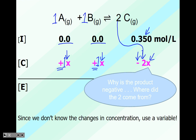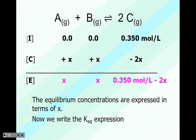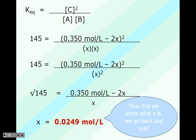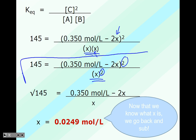Now that we have this, we figure out the equilibrium concentrations in terms of variables: x for species A, x for species B, and 0.350 minus 2x for species C. We write all this into our equilibrium constant expression — it looks funky because it has variables in it. That's where the algebra comes from. x times x gives x squared. Because there's a squared on both top and bottom, we can square root everything and solve for x.